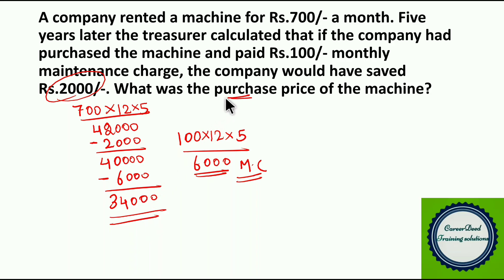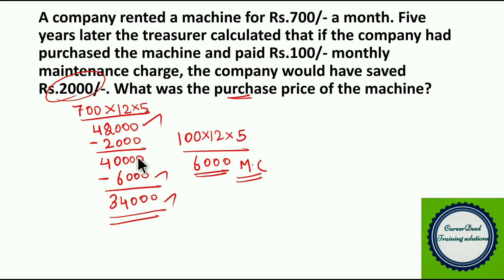To verify: if they rented the machine they pay Rs. 42,000. But if they purchase for Rs. 34,000 and pay Rs. 100 per month maintenance for 5 years (Rs. 6,000), the total cost is Rs. 40,000 — saving Rs. 2,000. So the answer is the purchase price is Rs. 34,000. This question is a little bit puzzle-oriented.